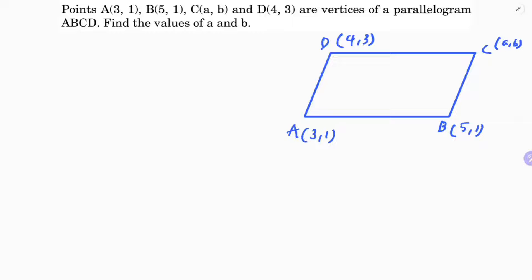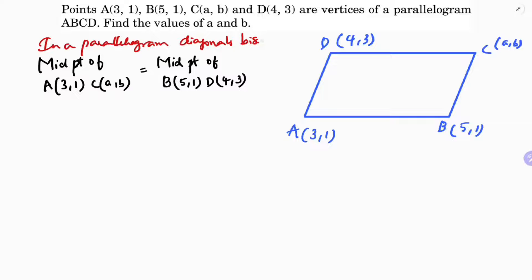So here I will use the property: midpoint of A (3, 1) and C (a, b) equals midpoint of B (5, 1) and D (4, 3). Because in a parallelogram, diagonals bisect each other.